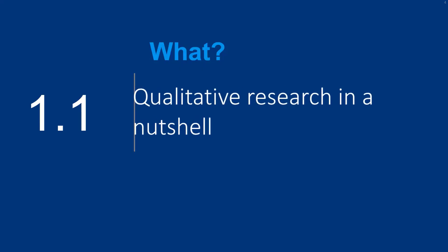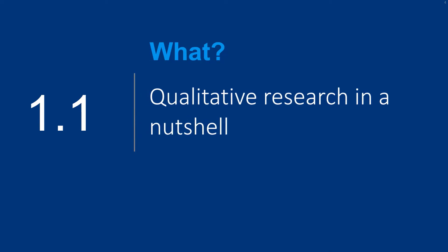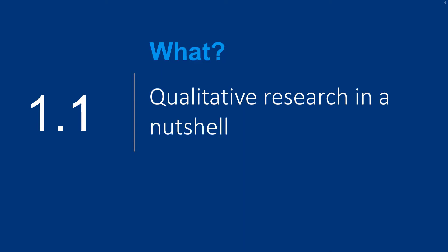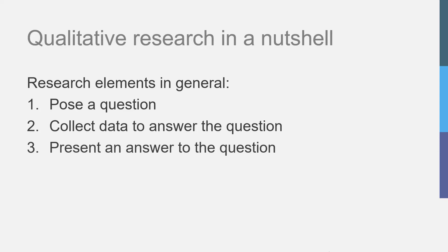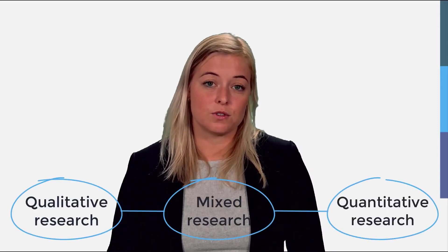I will explain in a nutshell what the characteristics of qualitative research are and some of the differences compared to quantitative research. In an oversimplified form, the core elements of doing research come down to the following: starting off with posing a question, collecting data to answer this question, and presenting those answers by analysing and interpreting this data. This holds for the three research paradigms presented on the continuum: qualitative research, mixed research and quantitative research.